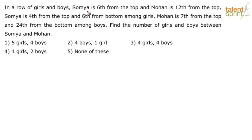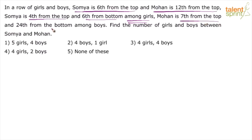In a row of girls and boys, Swamya is 6th from top and Mohan is 12th from top — this is about the overall class. Swamya is 4th from top and 6th from bottom among girls. Similarly, Mohan is 7th from top and 24th from bottom among boys. So their overall class positions are given and with respect to girls and boys respectively, the positions from top and bottom are given. What are we asked to find? The number of girls and boys between Swamya and Mohan.